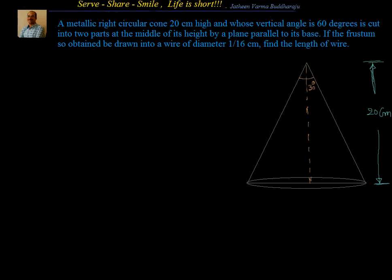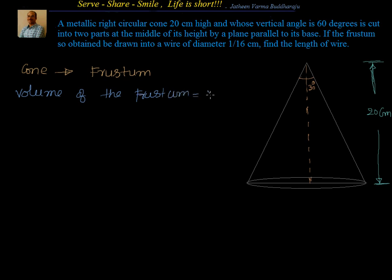Let's understand the approach for this problem. We have been told there is a circular cone of 20 centimeter high, and we cut that by a plane parallel to its base, then we get the frustum of the cone. The first step is: from the cone, get the frustum. Then, volume of the frustum is equal to volume of the wire.